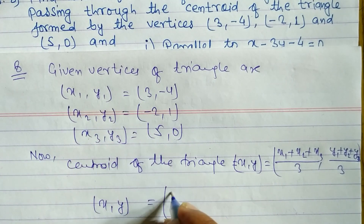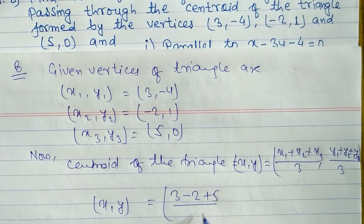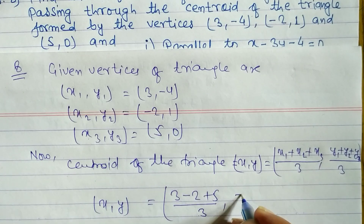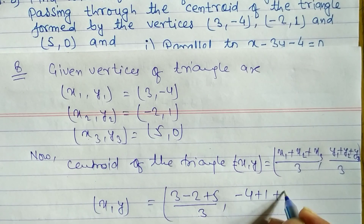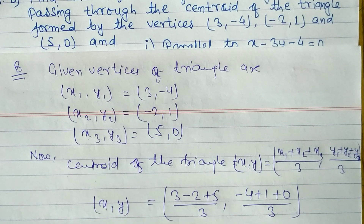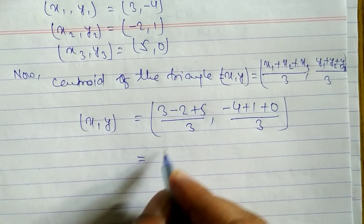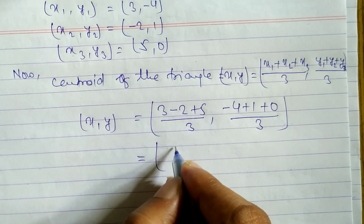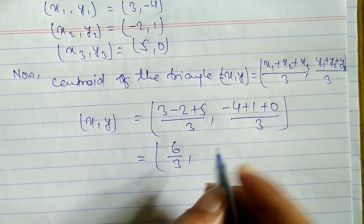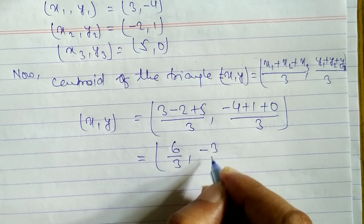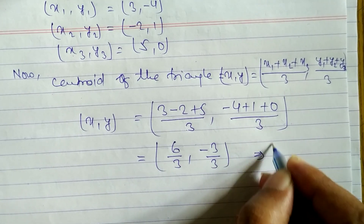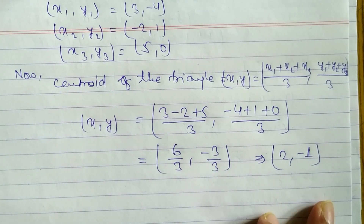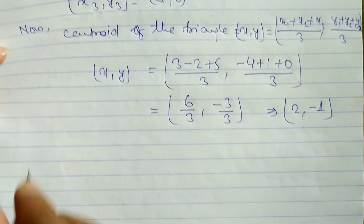Substituting: x-coordinates: (3 + (-2) + 5) / 3 = 6/3 = 2. Y-coordinates: (-4 + 1 + 0) / 3 = -3/3 = -1. So the centroid of the triangle is (2, -1).